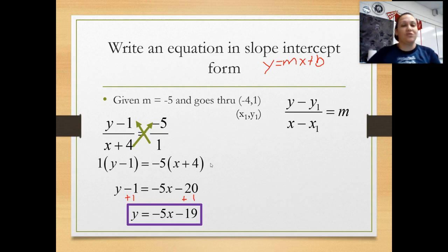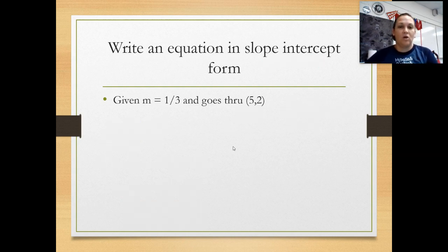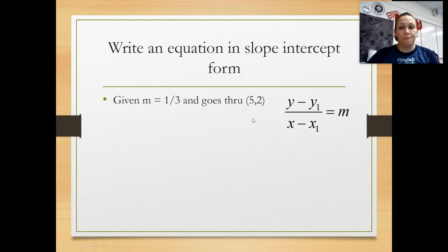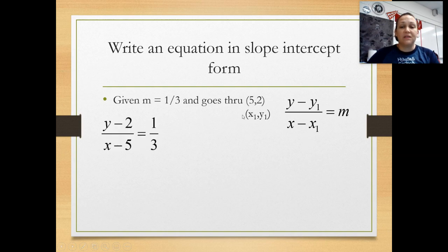Let's try one more together before you try your homework. Same concept — I was given a slope and an ordered pair. I'm going to use my altered slope formula where the 2s have been taken out so that this is just the letter y and that is just the letter x. My point has an x1 of 5, which will go on the bottom with my letter x, and it has a y1 of 2, which will go on the top with my letter y. Those should be the opposite sign of what they were in my ordered pair — so if it was a positive 5, it's a minus 5 down here, and if it was a positive 2, it's a minus 2 up here. My slope in this problem was already a fraction, so I left it a fraction, and it was not negative, so I don't have to worry about negative signs.